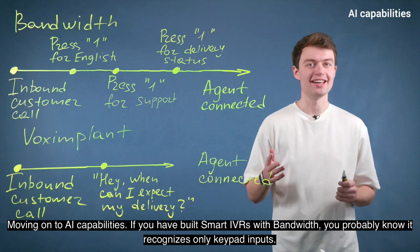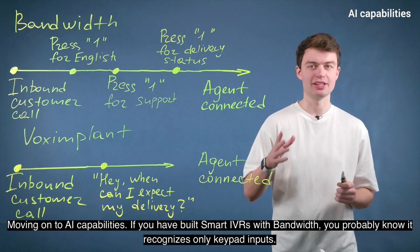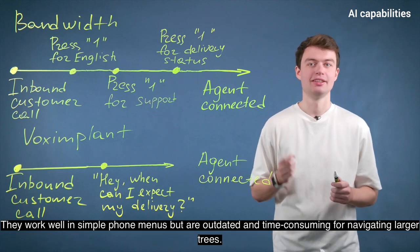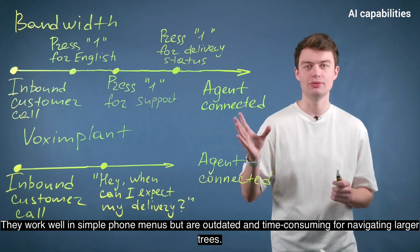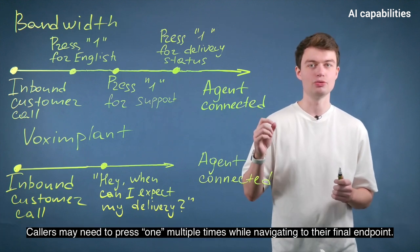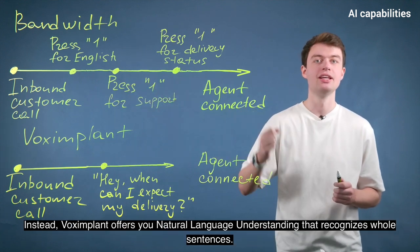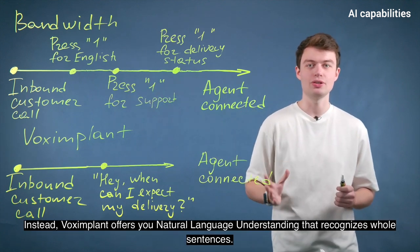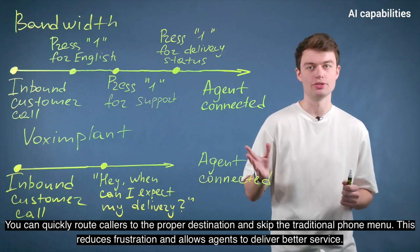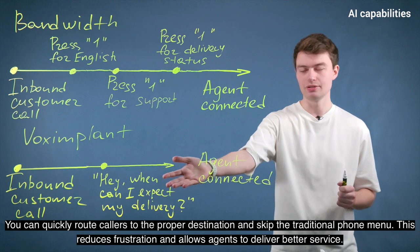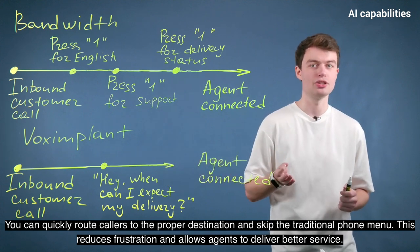Moving on to AI capabilities. If you've built smart IVRs with Bandwidth, you probably know it recognizes only keypad inputs. They work well in simple phone menus, but are outdated and time-consuming for navigating larger trees. Callers may need to press 1 multiple times while navigating to their final endpoint. Instead, Voximplant offers natural language understanding that recognizes whole sentences. You can quickly route callers to a proper destination and skip the traditional phone menu, reducing frustration and allowing agents to deliver better service.